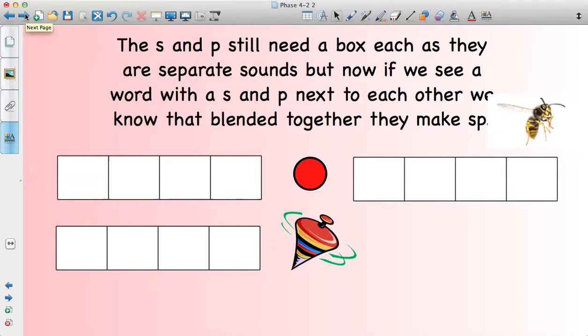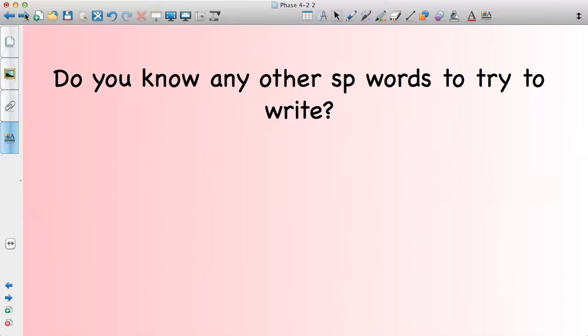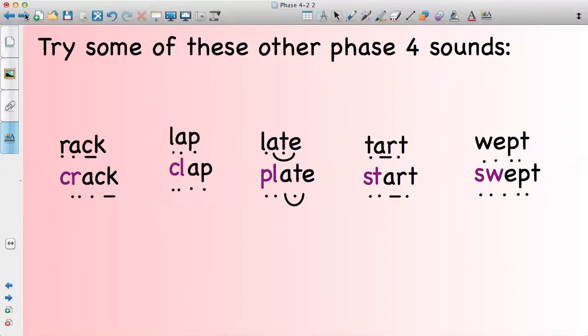And then what you can do is you could think of some more words that have got a sp at the beginning or the end and you could have a go at writing those up while I just go through with mummies and daddies some other ideas for Phase 4 phonics. So, as you can see, Phase 4 is quite a tricky one to teach because you're not teaching new sounds. You're not teaching alternate sounds. That comes up in Phase 5. And really, you're trying to teach children to blend efficiently. So, this phase is more about when you see a new unfamiliar word. If it starts with an S and a P, you can make the assumption that it starts sp. And that will make blending a little bit easier and a little bit quicker.